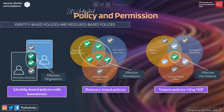For identity-based policies with permission boundaries, the effective permission is the intersection of the permission boundary and the identity-based policy. For resource-based policies, the effective permission lies between the union of the identity-based policy and resource-based policy, intersected with the permission boundary. The key difference is that resource-based policies are not dependent on implicit deny — if no policy exists on the identity side but there is a resource-based policy with effect Allow, the permission will still be granted.